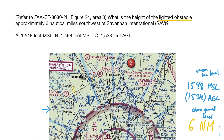Answer A matches: 1548 feet MSL. Let's see why the others are incorrect. Answer B has 1498 feet MSL — the elevation is simply incorrect. Answer C has 1533 feet AGL, which is very close to being right, but the elevation is off. If it were 1534 feet AGL it would be correct, but since it says 1533 feet AGL, it does not work.